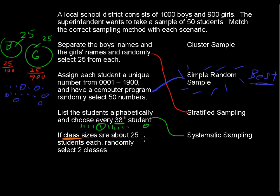But it's different from stratified because you are choosing the entire class, or in this case, two classes. You could choose the entire one or two or three, whatever it is, but you're choosing the entire group.